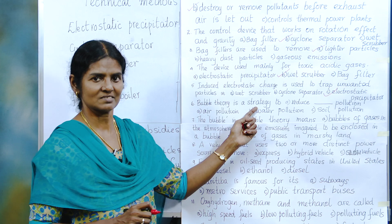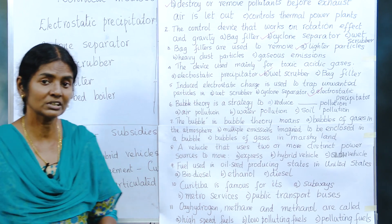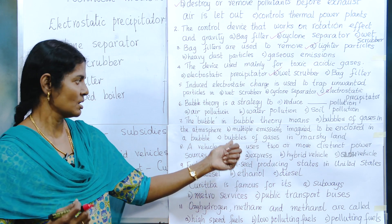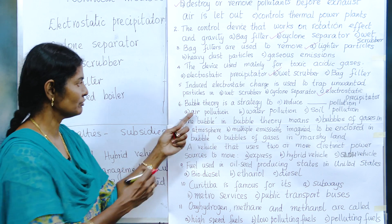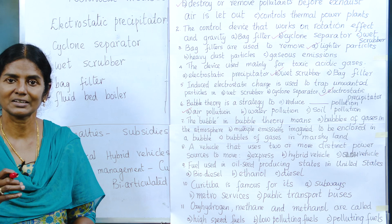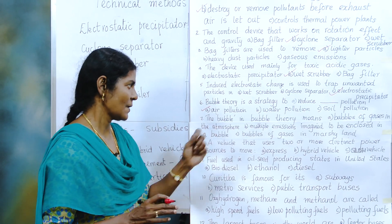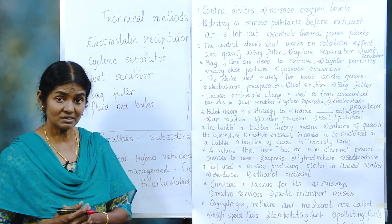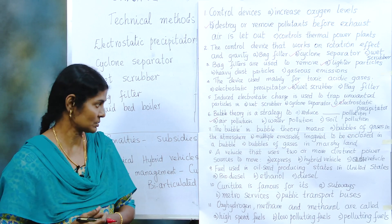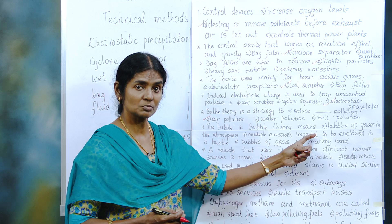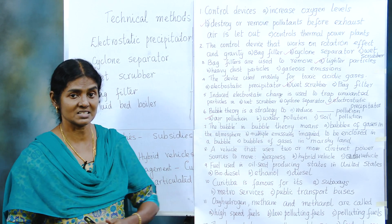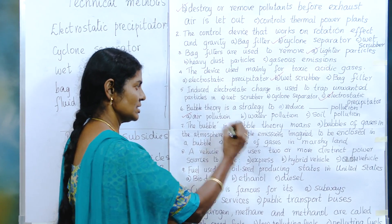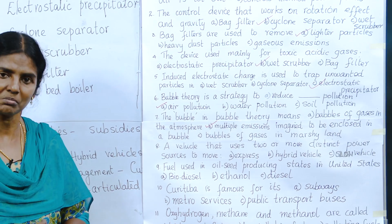Bubble theory is a strategy — a method — to reduce what? Air pollution, water pollution, or soil pollution? Very importantly, it is only for air pollution. Remember: a bubble is filled with air. The bubble in bubble theory — is it bubbles of gases in the atmosphere, or multiple emissions imagined to be enclosed in a bubble, or bubbles of gases in marshy land? The correct answer is: multiple emissions imagined to be enclosed in a bubble.